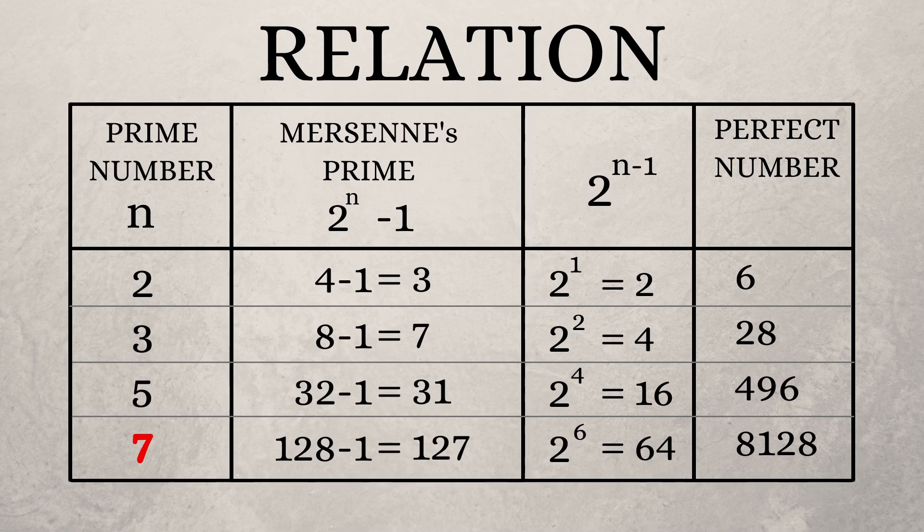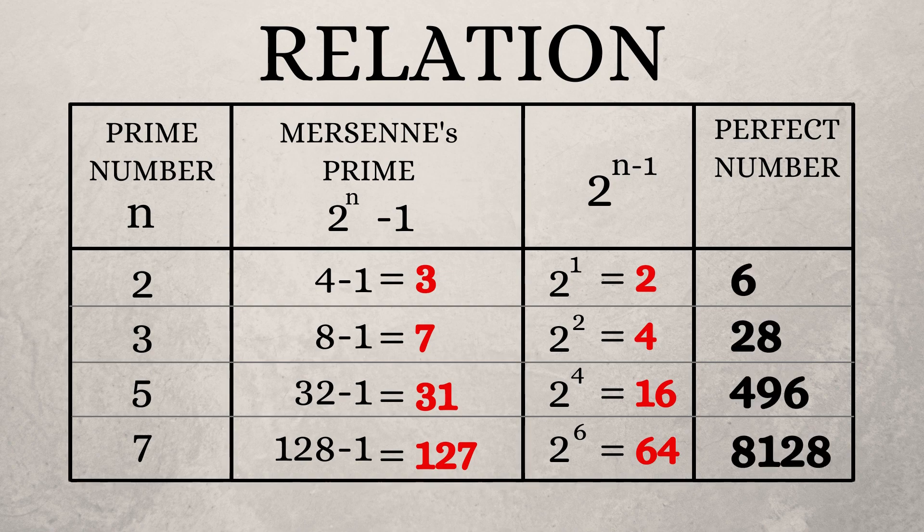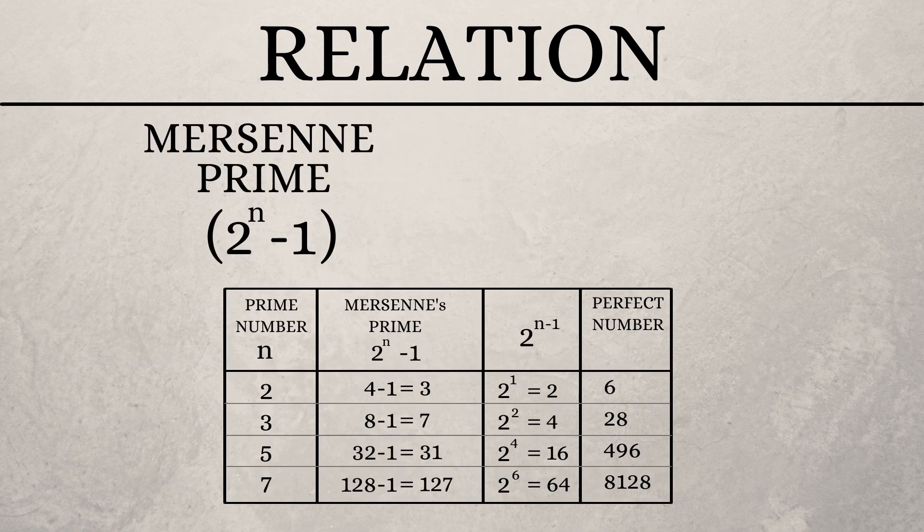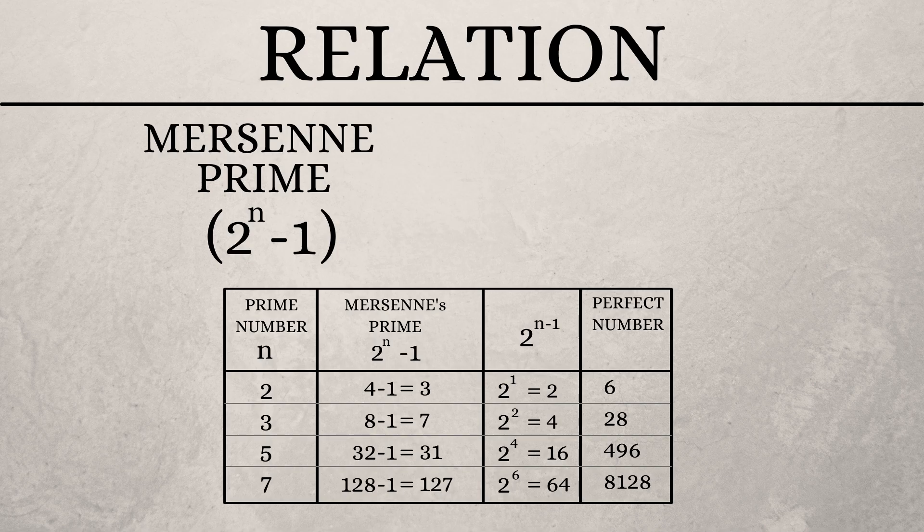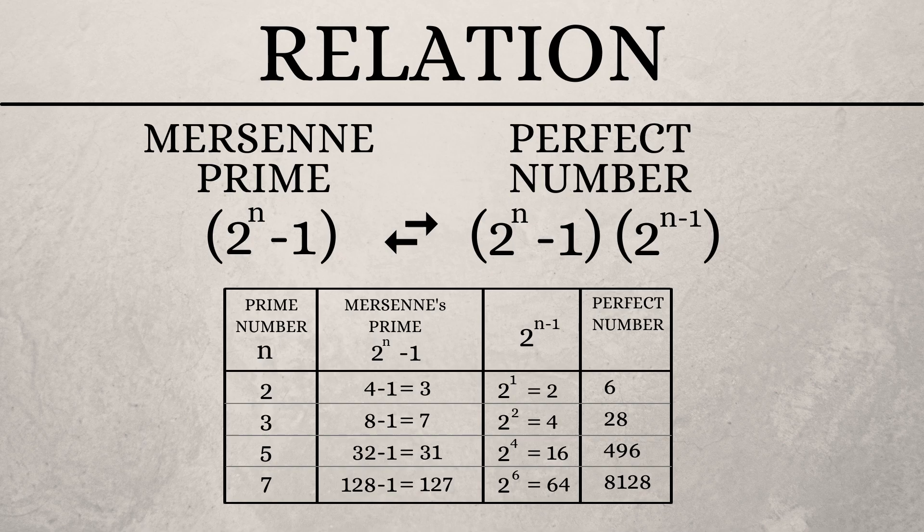Now, we can see that the numbers we just found when multiplied with the corresponding Mersenne primes will give us the perfect numbers. So, to generalize, for every Mersenne prime, 2 to the power of n minus 1, we have a perfect number which is the product of 2 to the power of n minus 1 into 2 to the power of n minus 1.